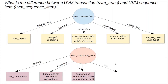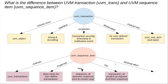It also uses the transaction ID to basically correlate various requests and their responses. Another advantage of a UVM sequence item is that with really minimal effort you can use it directly to leverage the whole transaction level modeling — the basis of UVM — to send and receive requests and responses from the sequence, sequencer, and driver, and all the way back to the sequence. So this ties directly into a UVM sequence, sequencer, UVM driver, and sending responses back from the driver through the sequencer to the sequence. For all of that, we use UVM sequence item.